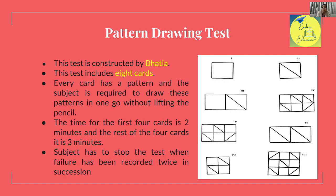The third sub-test is the Pattern Drawing Test, and this test was constructed by Bhatia himself. It includes 8 cards, each with a pattern. The subject is required to draw these patterns in one go, without lifting the pencil from the paper. The time for the first 4 cards is 2 minutes, and for the next 4 cards it is 3 minutes. The test is stopped when the subject records failure twice in succession.